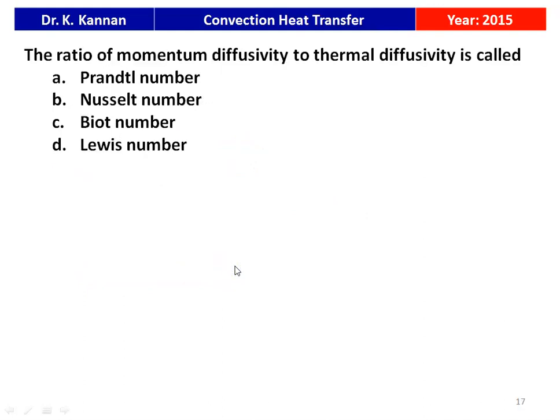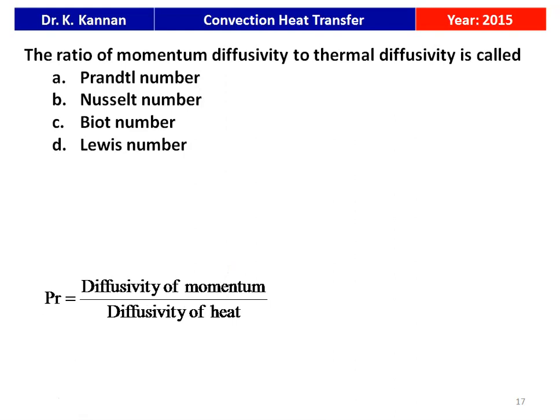The ratio of momentum diffusivity to thermal diffusivity is called — Prandtl number, Nusselt number, Biot number, or Lewis number? The definition: Prandtl number is the ratio of diffusivity of momentum to diffusivity of heat. So the answer is Prandtl number.